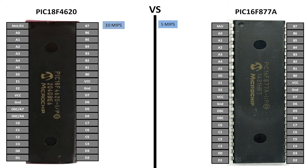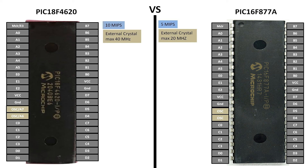CPU speed is measured in terms of millions of instructions per second — MIPs. The PIC18F4620 is a newer version compared to the PIC16 series, so it has 10 MIPs speed, while the PIC16 has 5 MIPs speed.